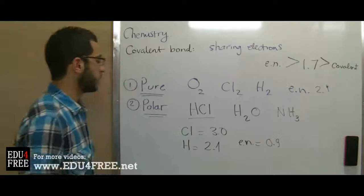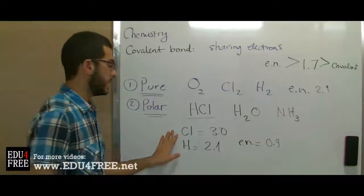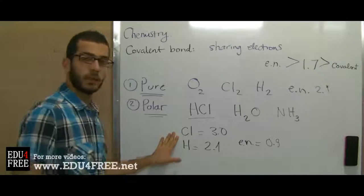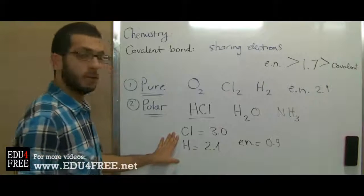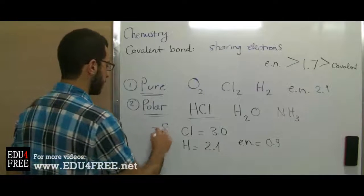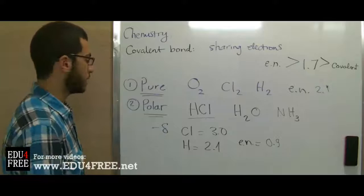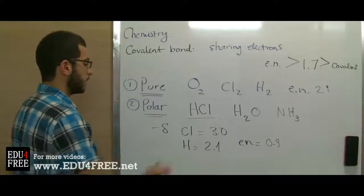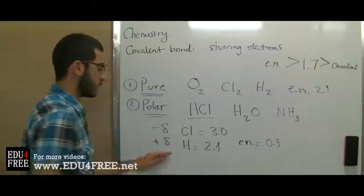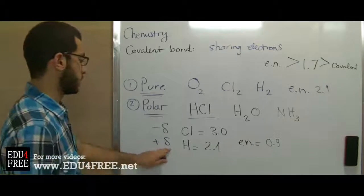And because the electronegativity of chlorine is high, it will attract the electrons for a longer time, and we deduce from this that it will have a partial negative charge because it will take the electrons for a longer time than hydrogen. Accordingly, hydrogen will acquire a partial positive charge.